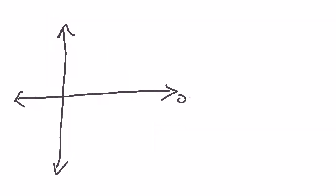Usually the horizontal axis is x and the vertical axis is y. We'll never put x on the vertical axis and y on the horizontal axis. But sometimes you might have other labels, like cost and profit. For now we're just going to deal with x's and y's.